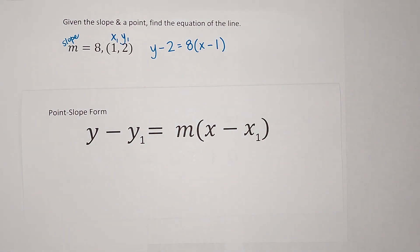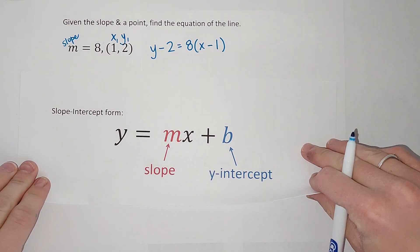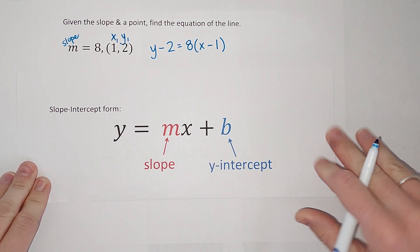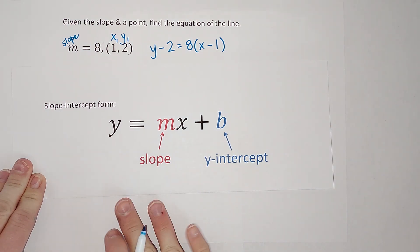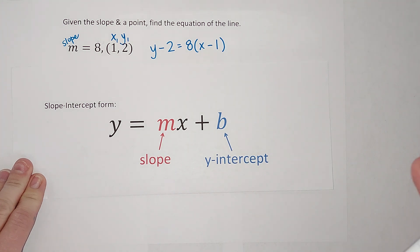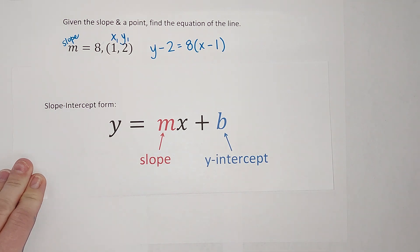Now you might be like, sweet, I'm done. Not quite. We like to simplify things in math. We want to get this into slope-intercept form. This is probably the one you're used to seeing. Get used to this, baby. You're going to be seeing it a lot. This is almost 100% of the time how you're going to want your answer when we're talking linear equations.